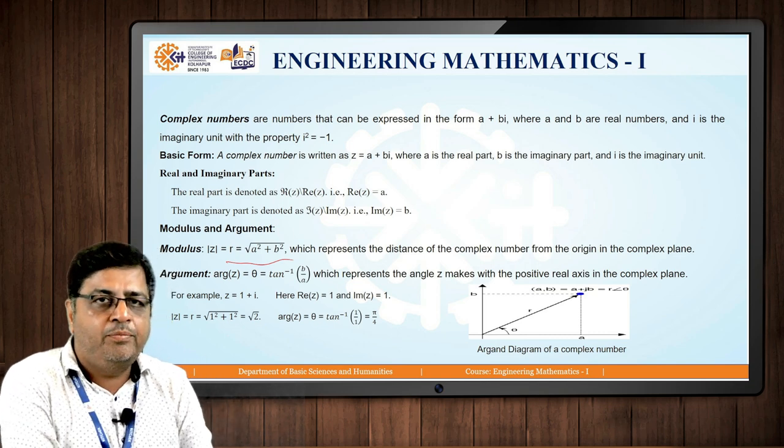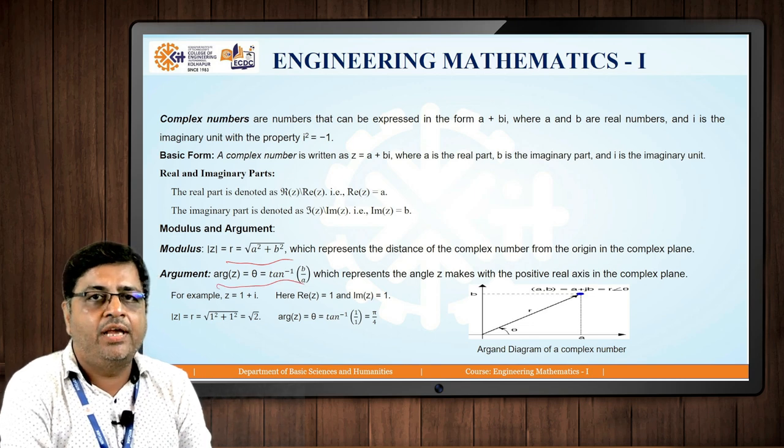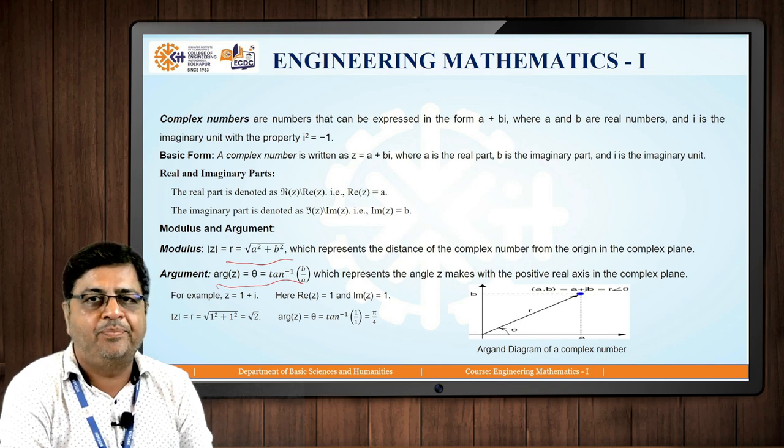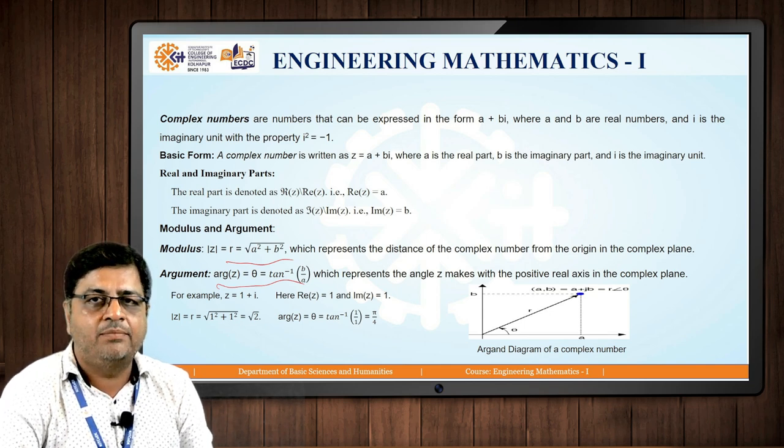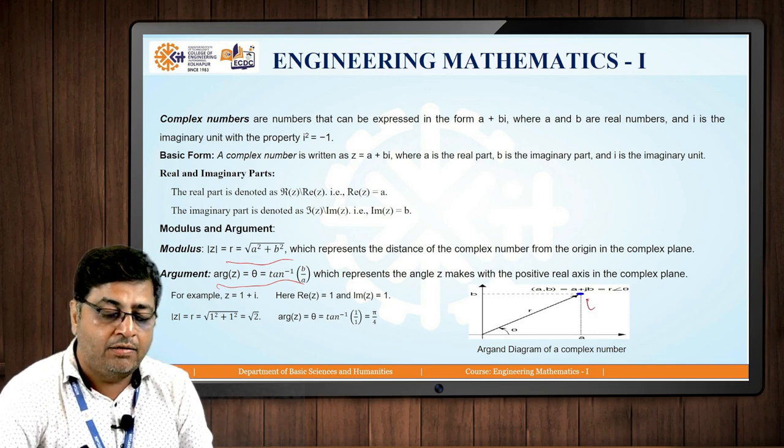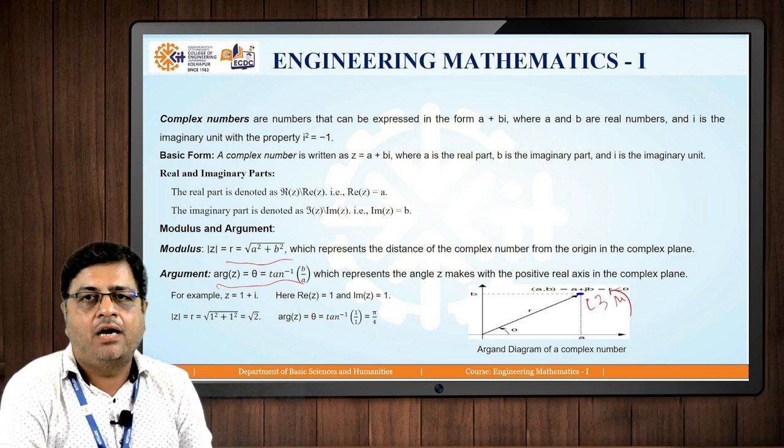Argument is tan inverse B upon A. We call it as theta, which represents the angle Z makes with the positive real axis in the complex plane. I have shown a complex number in Argand's diagram. This is the point which we will represent in the Argand diagram.